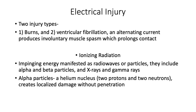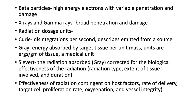Ionizing radiation involves impinging energy manifested as radio waves or particles — alpha and beta particles, x-rays, and gamma rays. Alpha particles are helium nuclei with two protons and two neutrons; they create localized damage without penetration. Beta particles are high-energy electrons with variable penetration and tissue damage. X-rays and gamma rays have broad penetration. Radiation dosage units: the curie measures disintegrations per second from a source; the gray measures energy absorbed by target tissue per unit mass in ergs per gram; the sievert measures gray corrected for biological effectiveness of radiation, depending on radiation type, tissue extent, and duration.